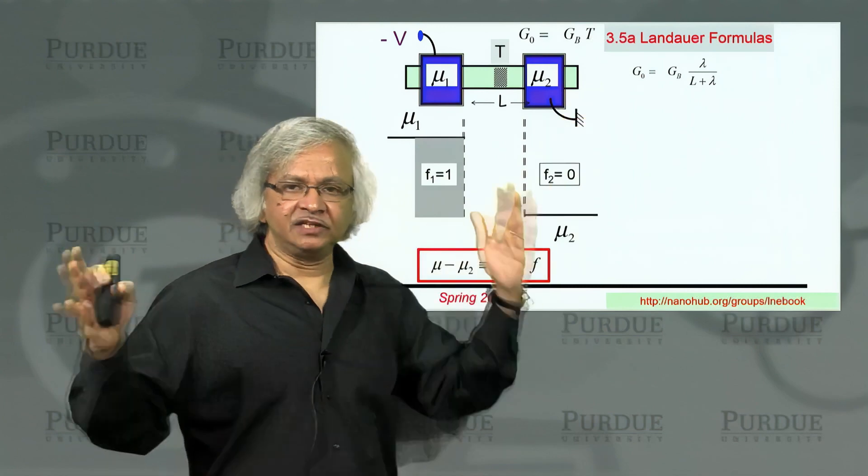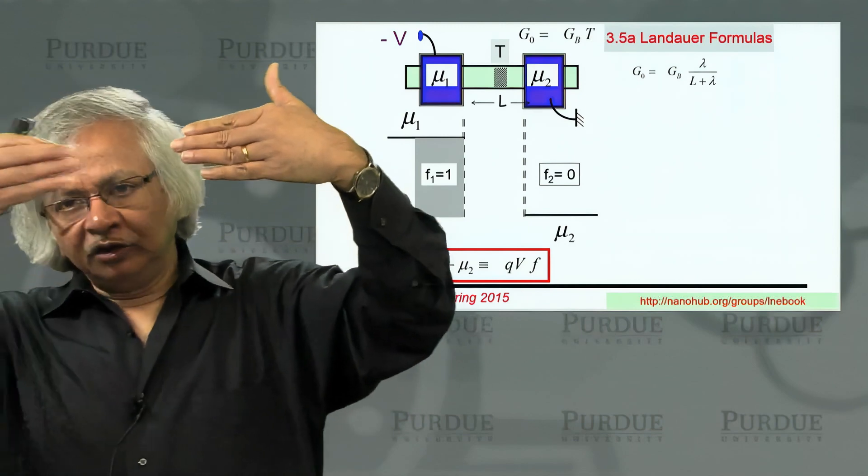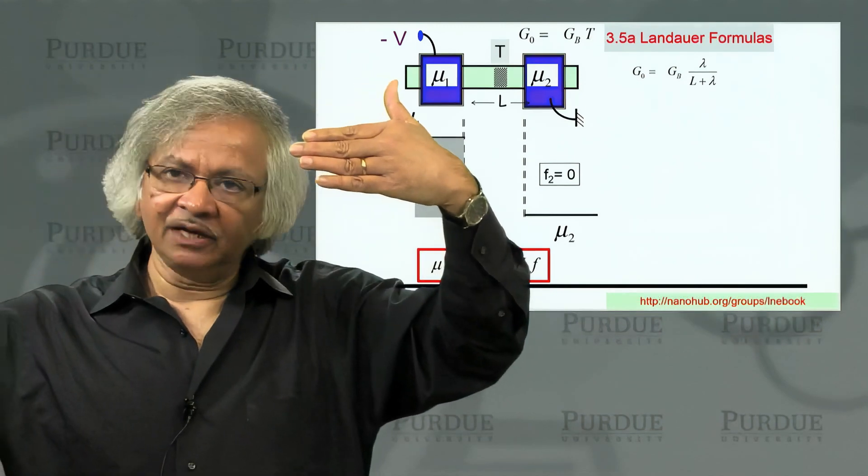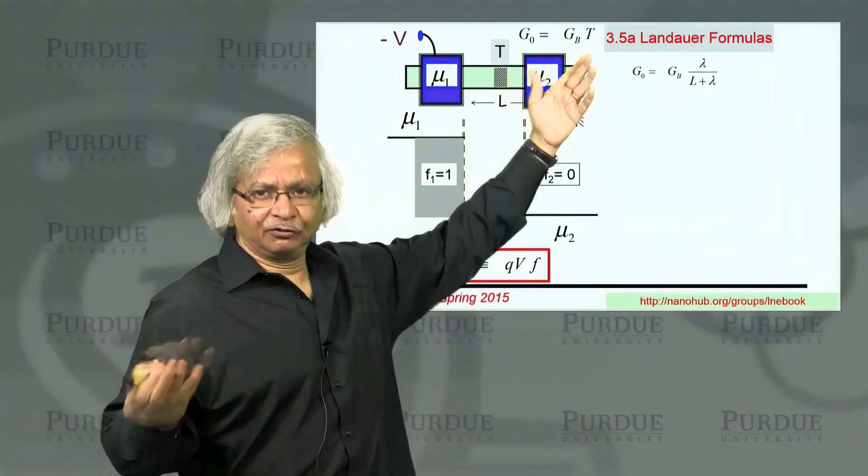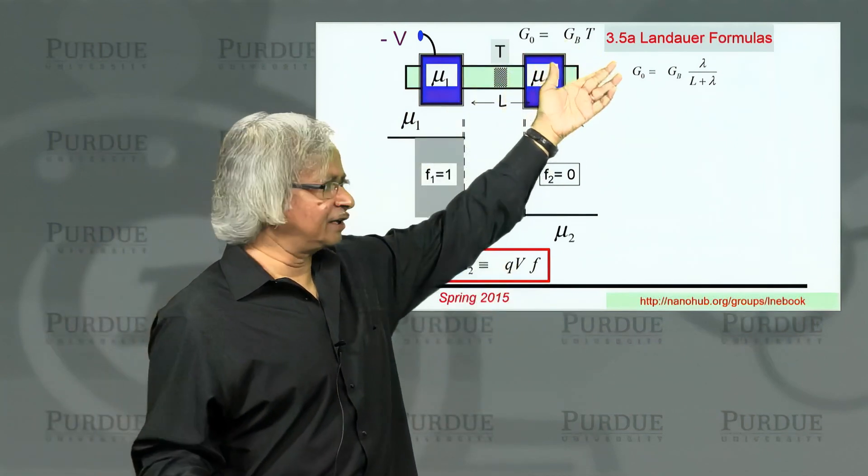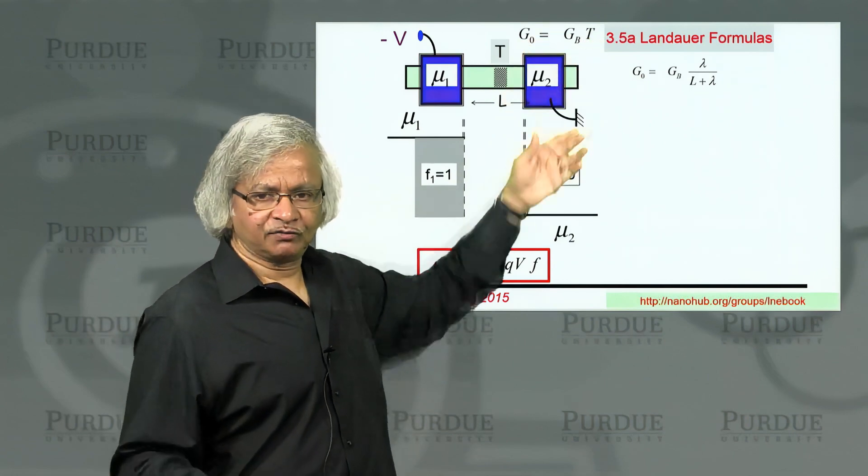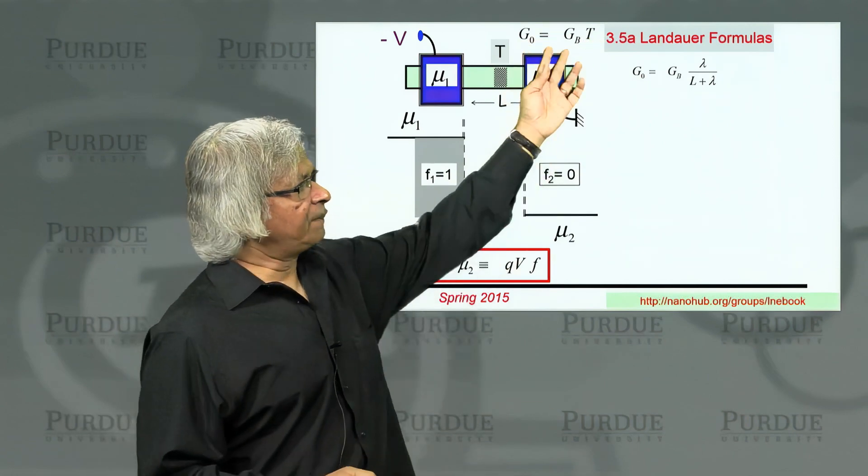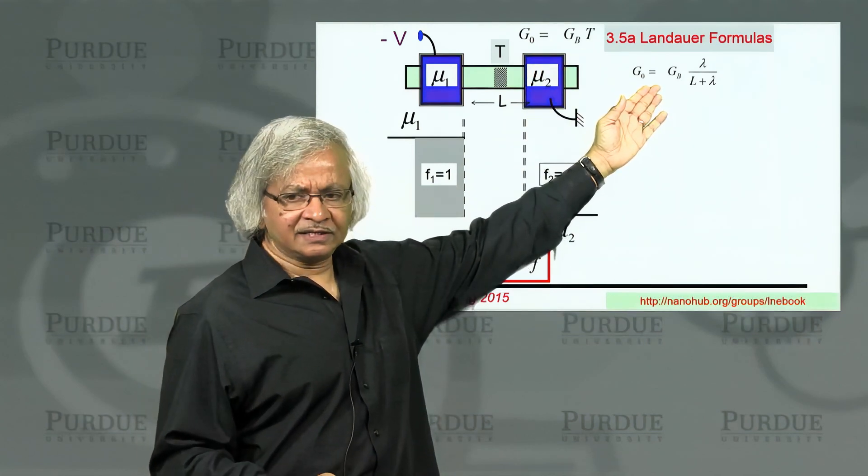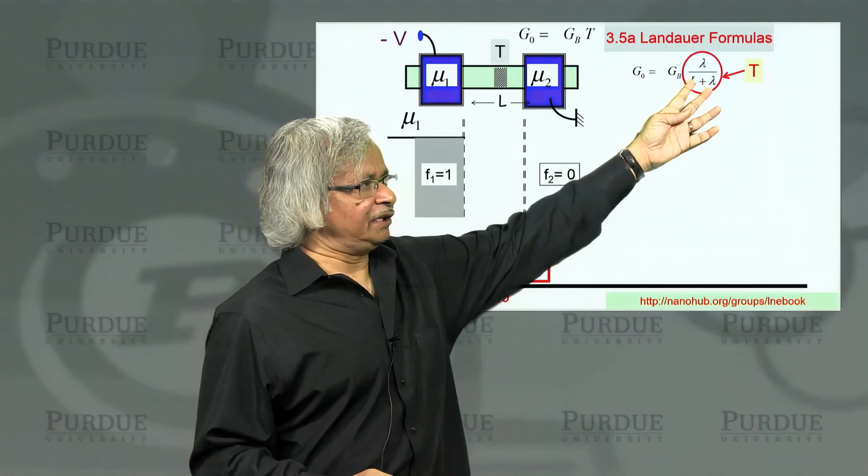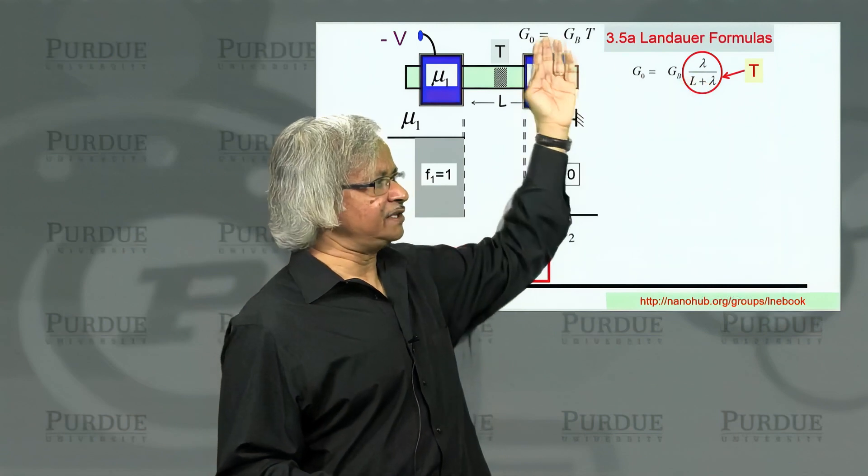What it describes is if 100 electrons come in here per second, what fraction crosses the scatterer and gets out on the other side? So if T is 0.2, that means if there's 100 per second coming in, only 20 per second leave from the other side. As a result, the current flow becomes 20 percent, and so the conductance becomes 20 percent.